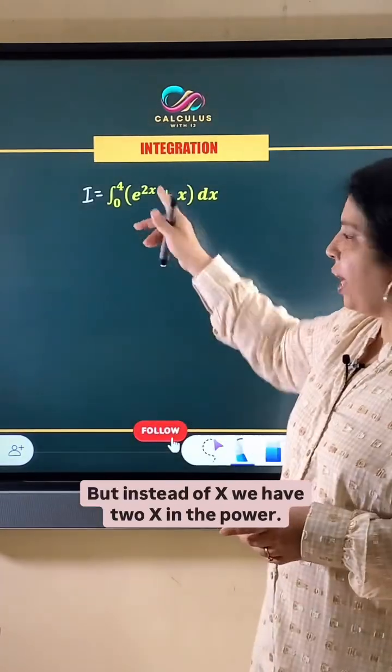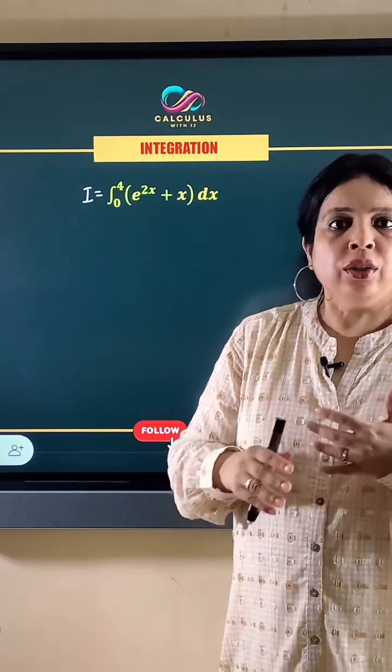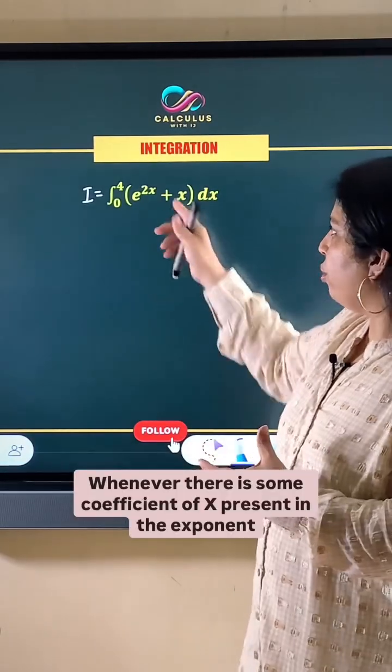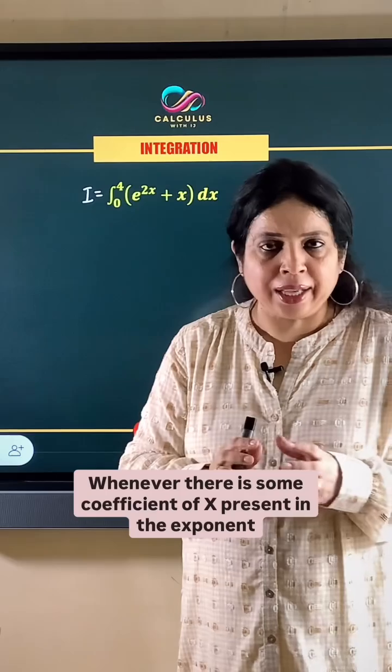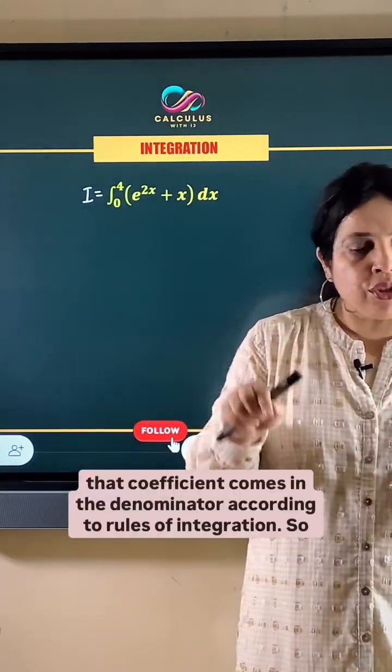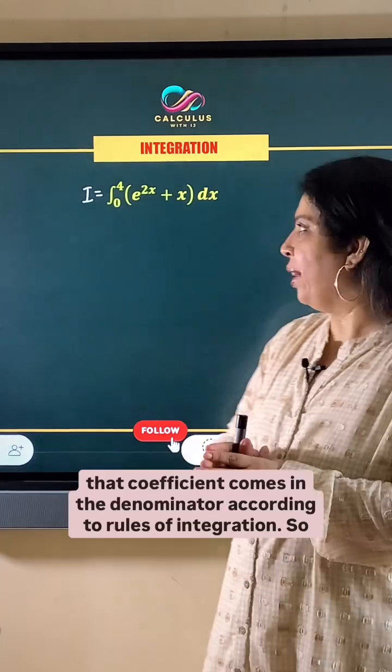But instead of x we have 2x in the power. So whenever there is some coefficient of x present in the exponent, that coefficient comes in the denominator according to rules of integration.